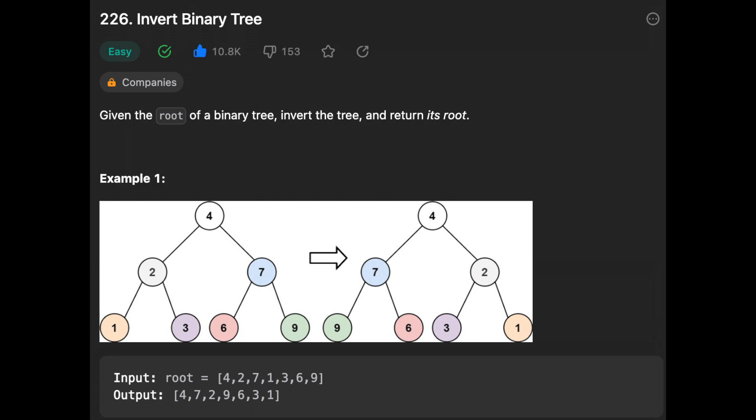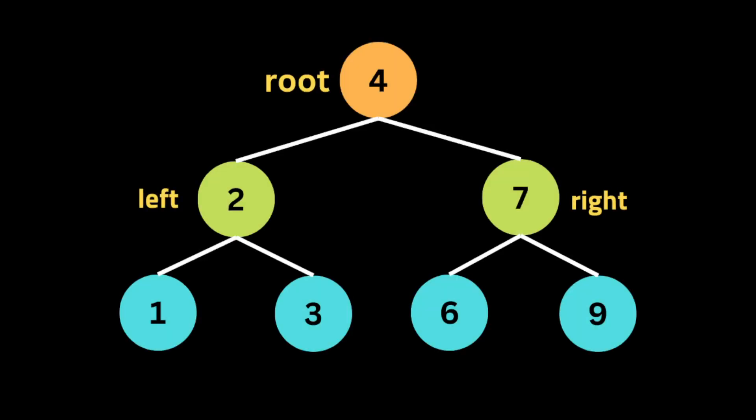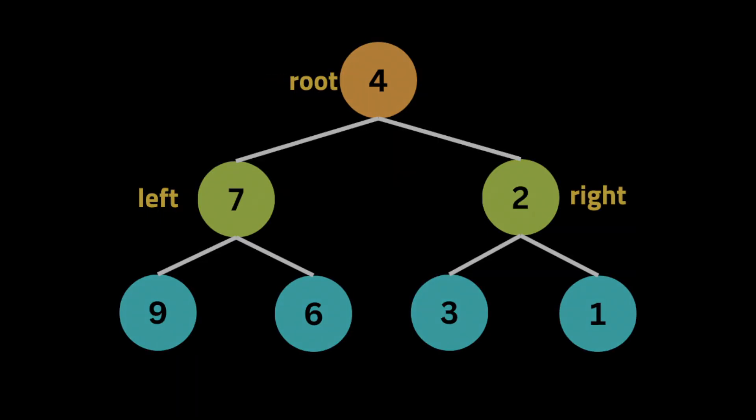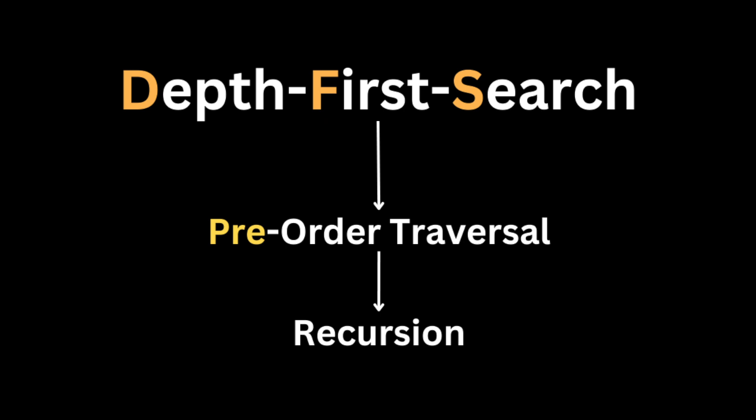Hello guys, hope you are all doing well. In this video we're going to solve the problem 'Invert Binary Tree'. The problem gives you the root of a binary tree and asks you to invert it. An inversion, or mirror, of a binary tree is a binary tree whose left and right children are swapped. For example, if we have a tree that looks like this, after the inversion it should look like this.